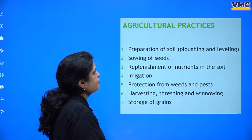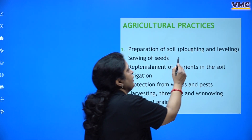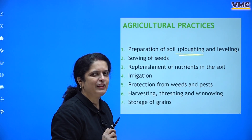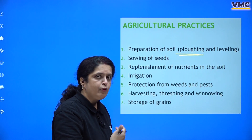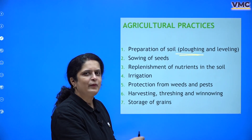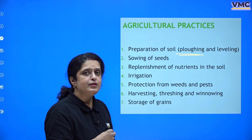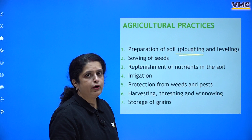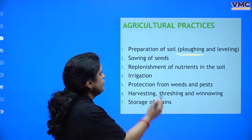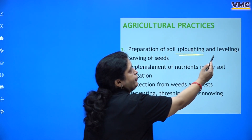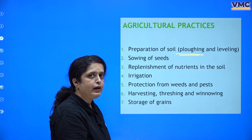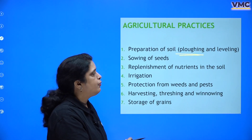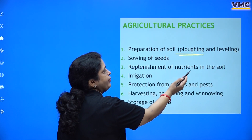How are we going to prepare the soil? For soil preparation, first you need to do plowing — that same 'hal' you may have seen in movies — turning the soil upside down so that it becomes more aerated and allows water to go through it. Before sowing the seeds, we do leveling: the turned soil is brought to one level, and then we replenish it with nutrients.